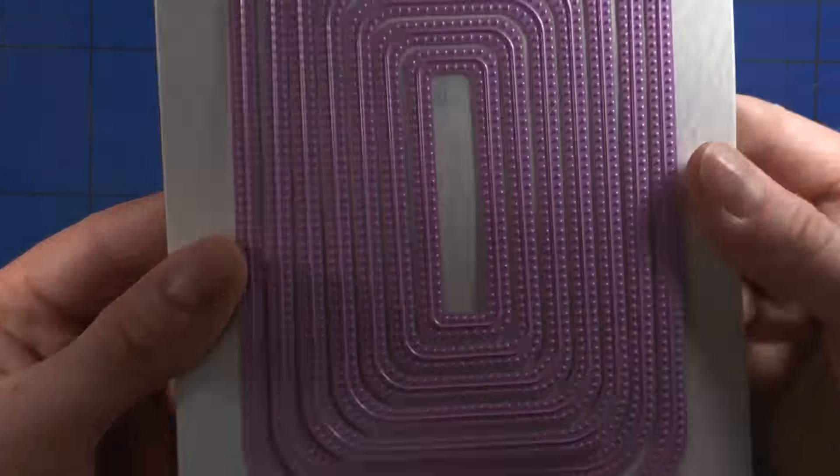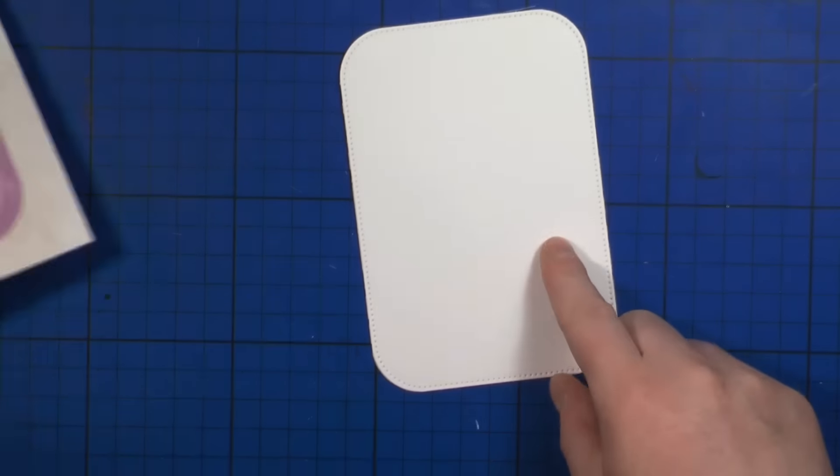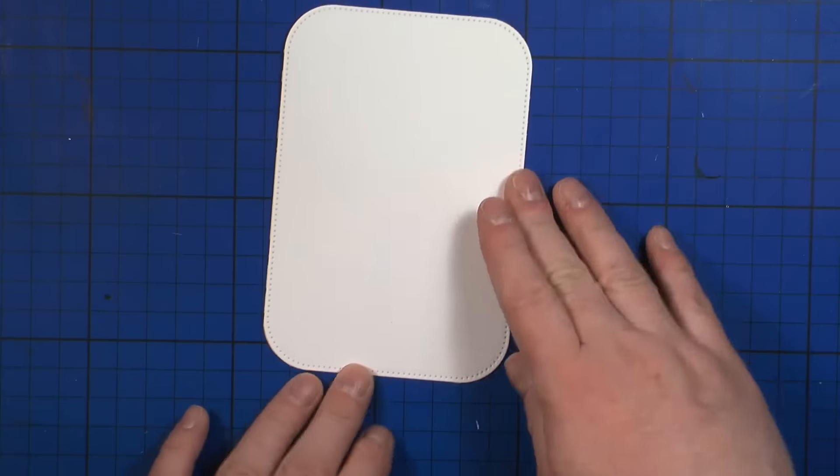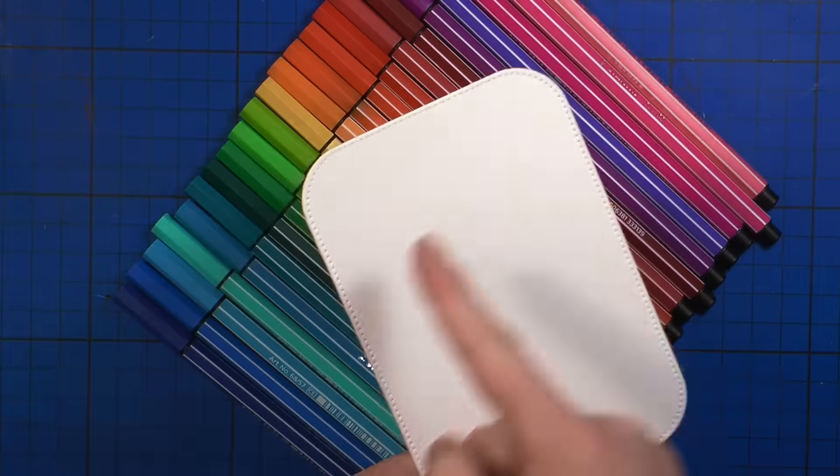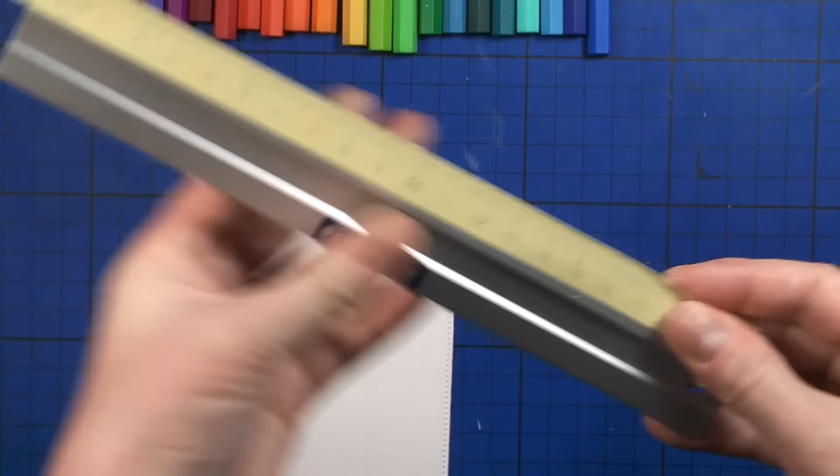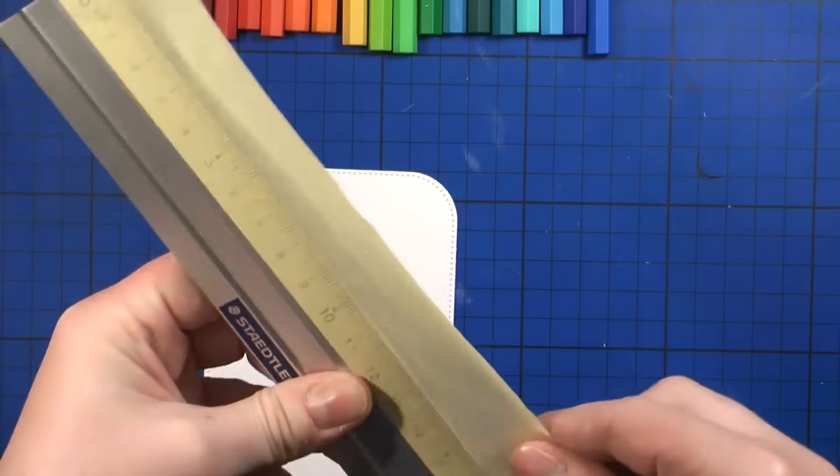And for the second card, I'm using this Nelly's Multi-Frames die set. It's got these beautiful rounded edges, and it creates dots on the inner and outer side of a die-cut panel. And I'll also be using Stabilo 68 pens, and that is why I'm also using a smooth watercolor cardstock, which is very thick.